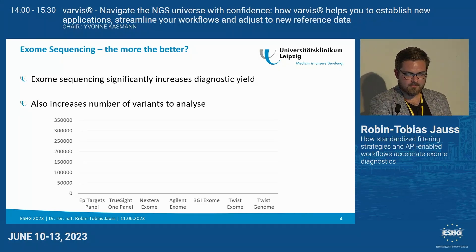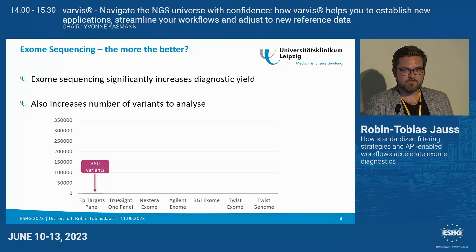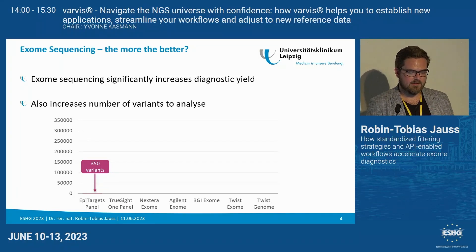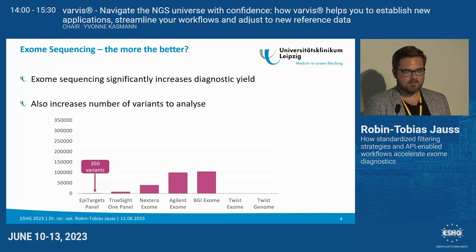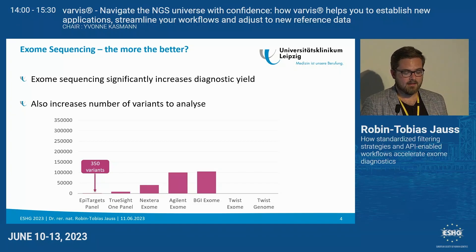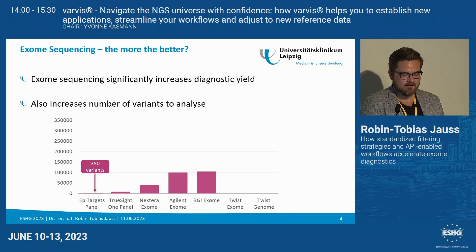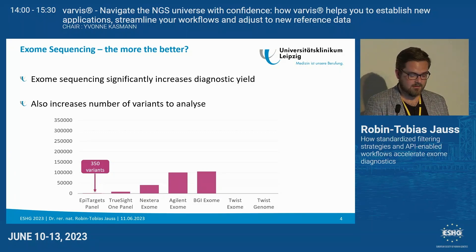In Leipzig, when we started with very small targeted panels like epilepsy-specific panels, we had to analyze around 350 variants per case. More comprehensive panels increased this number, and switching to exomes significantly increased it again. With our BGI exome analysis, we had to evaluate around 100,000 variants per case, which is quite a lot.